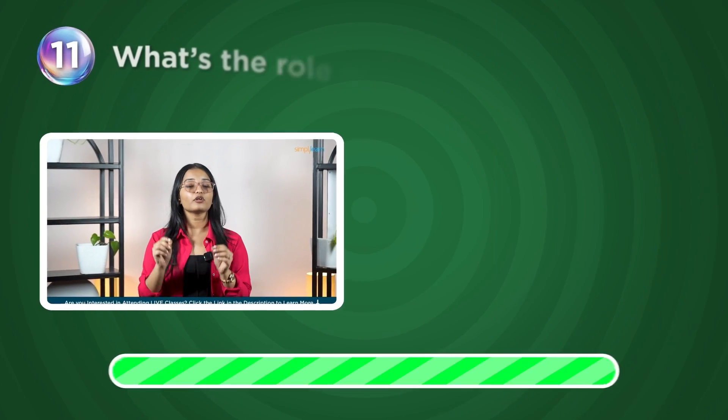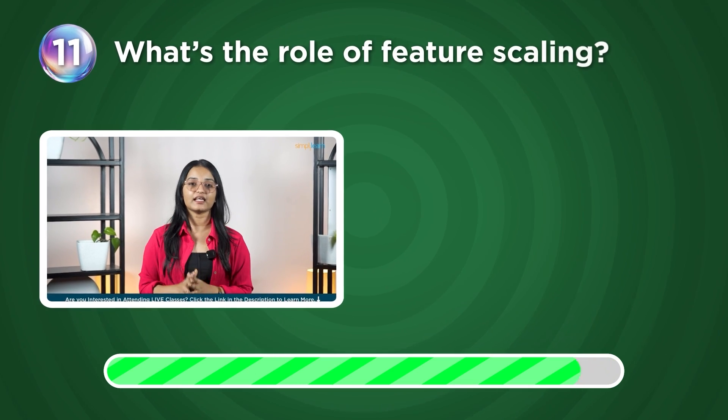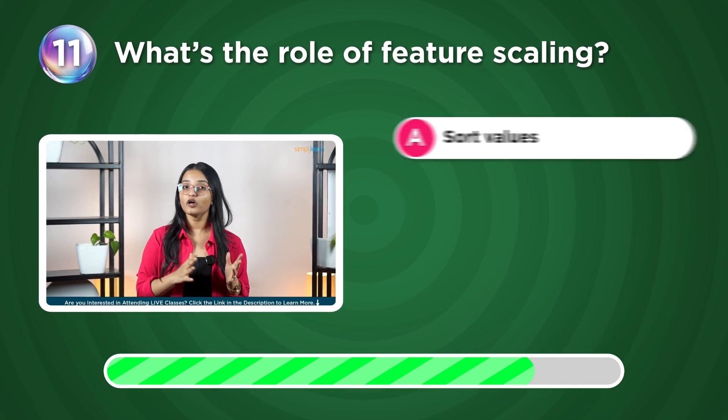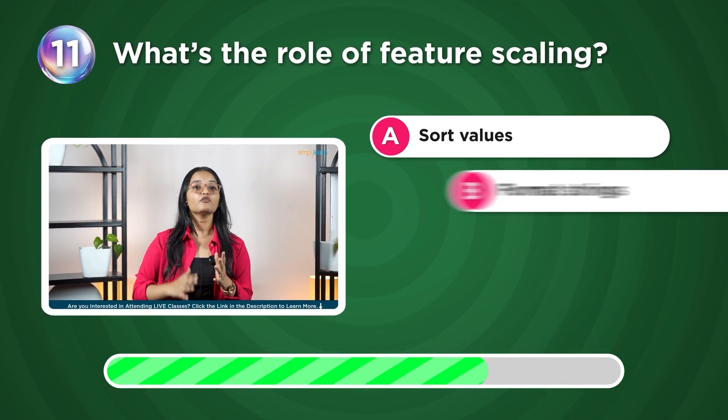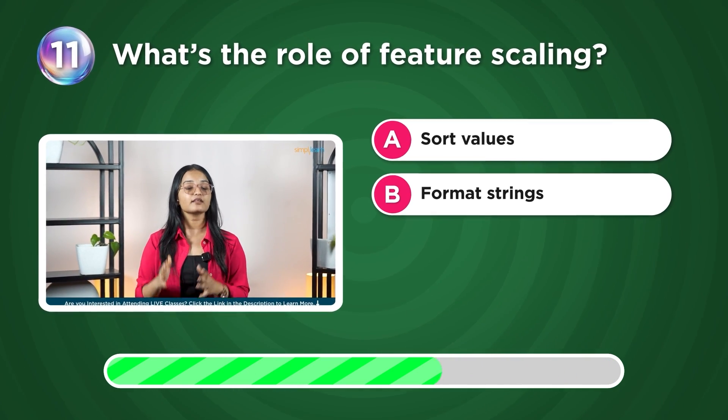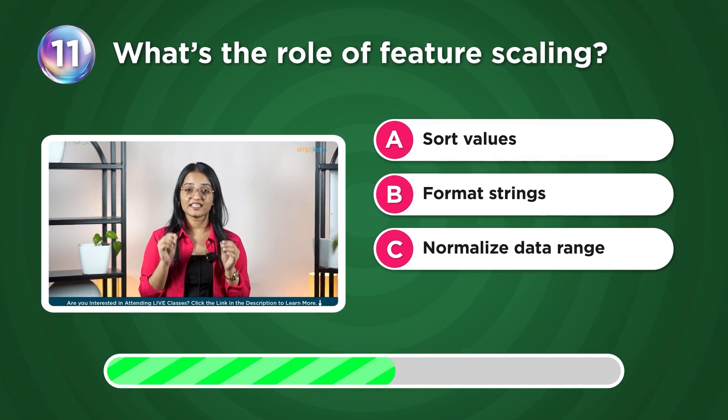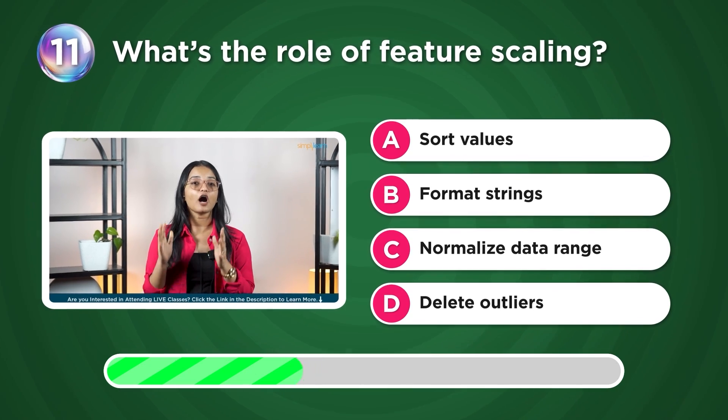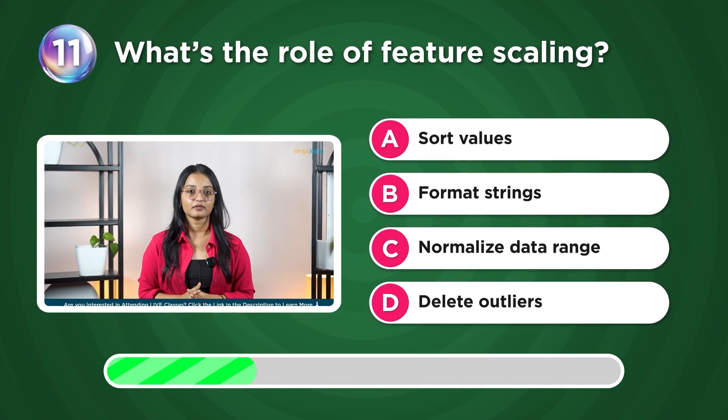What's the role of feature scaling? Sort values, format strings, normalize data range, or delete outliers?